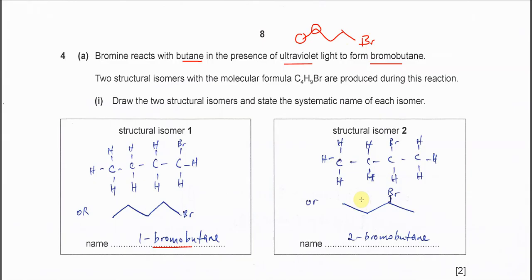It can also be 2-bromobutane if the substitution is on the second carbon. You initially draw the four carbon structure and put the Br here on the second carbon. You can draw the skeleton or the full structure.